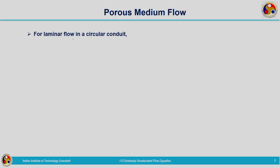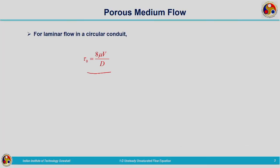Now, in the case of laminar flow, we have another expression for wall shear stress based on the laminar flow criteria. Depending on the Reynolds number, we can classify flows into laminar, turbulent, and transition — this we have studied in fluid mechanics. In the case of pipe flow with laminar flow, we can write wall shear stress tau_0 is equal to 8 mu V divided by D, where mu is the dynamic viscosity of the fluid.